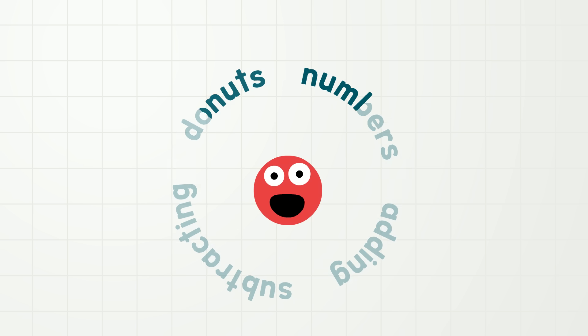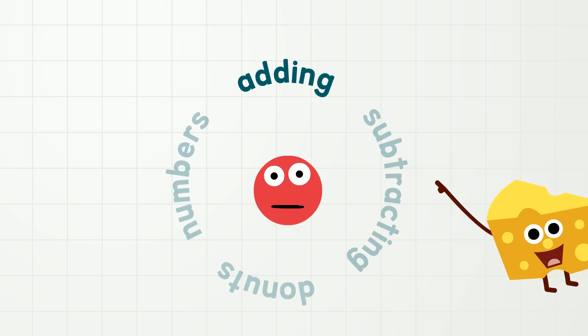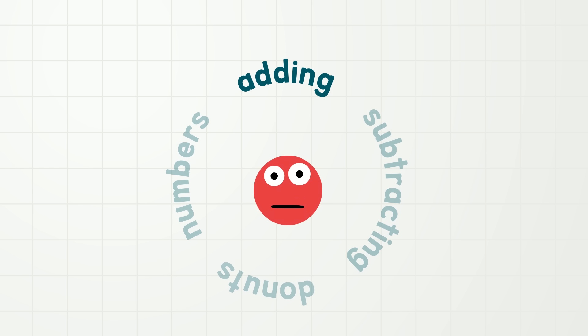So we all know that numbers can be joined together to make bigger numbers. We call this adding. And we also know that we can take away numbers from bigger numbers to make smaller numbers. We call this subtracting.